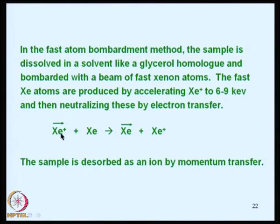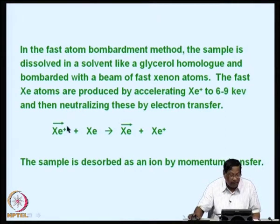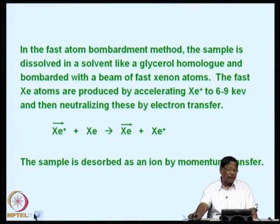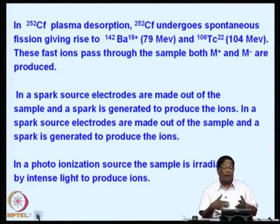Another technique is fast atom bombardment (FAB). Here the sample is dissolved in a solvent like a glycerol homologue and bombarded with a beam of xenon atoms. Fast xenon atoms are produced by accelerating xenon ions to about 6.9 kilo electron volts and then neutralizing these by electron transfer. The xenon ions combine with xenon to produce xenon ions and xenon molecules. Only momentum is transferred, and the sample is desorbed as an ion by momentum transfer rather than production of separate ions.